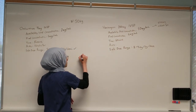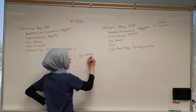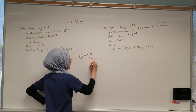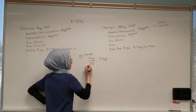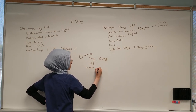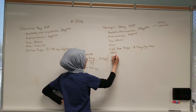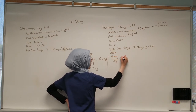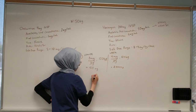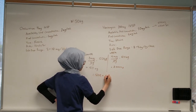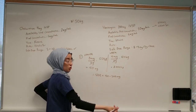First, we calculate our safe dose range. Lower bound: 3 mg/kg × 50 kg = 150 mg. Upper bound: 4 mg/kg × 50 kg = 200 mg. So our safe dose range is 150 to 200 mg. Going back to the order of 200 mg — this falls within the range, so it's a safe dose and we can proceed.